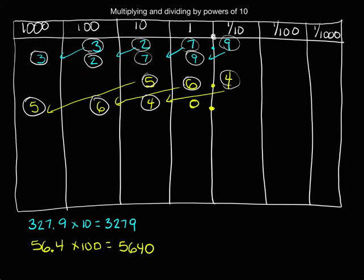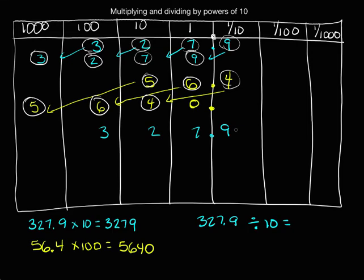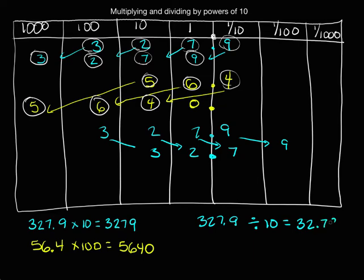Now let's talk about some division. Let's start again with 327 and 9 tenths, but this time divide it by 10. Put it into my place value chart. When we're dividing by 10, our numbers are going to become smaller. So instead of our digits shifting to the left, they're going to shift to the right one place value. So now each of my digits will shift to the right one place value, and I still have my decimal. So 327 and 9 tenths divided by 10 is 32 and 79 hundredths.